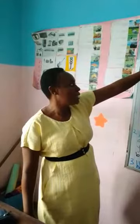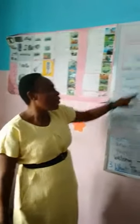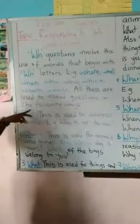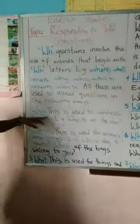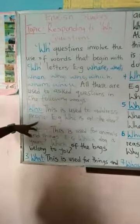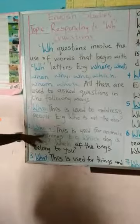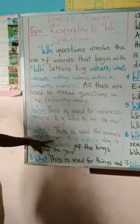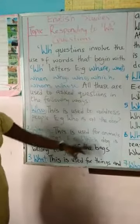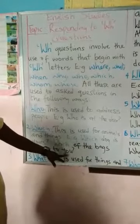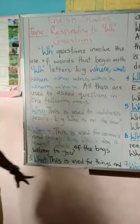All these words are used to ask questions. Number one: WHO — this is used to address people. For example, 'Who is at the door?' Number two: WHICH — we use which for animals and things. For example, 'Which dog is yours?' or 'Which of the birds belongs to you?'